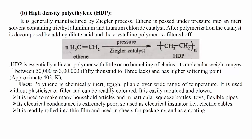Polythene is chemically inert, tough, and pliable over a wide range of temperature. It is used without plasticizer or filler and can be readily colored. It is easily molded and blown. It is used to make many household articles, in particular squeeze bottles, toys, and flexible pipes. Its electrical conductance is extremely poor, so it is used as an electrical insulator in electric cables. It is readily rolled into thin film and used in sheets for packaging and as a coating.